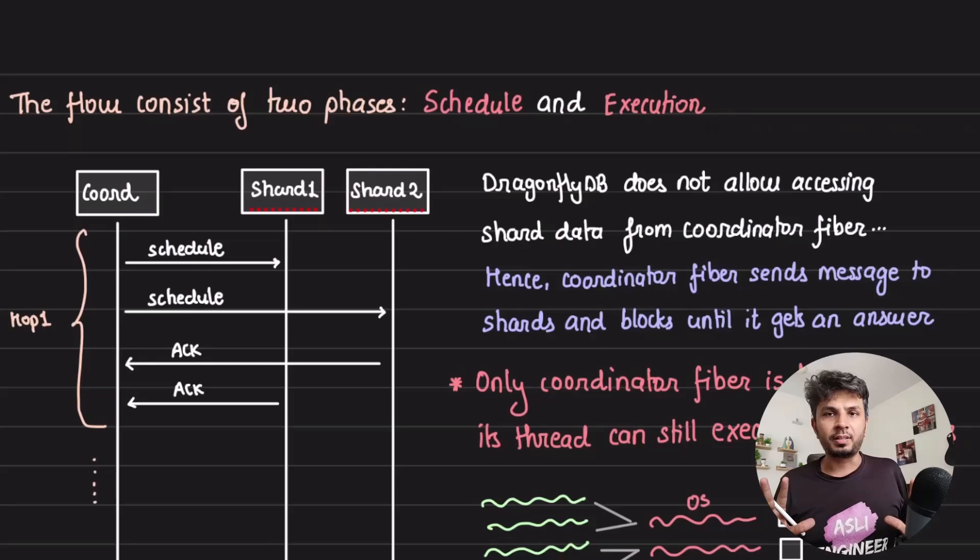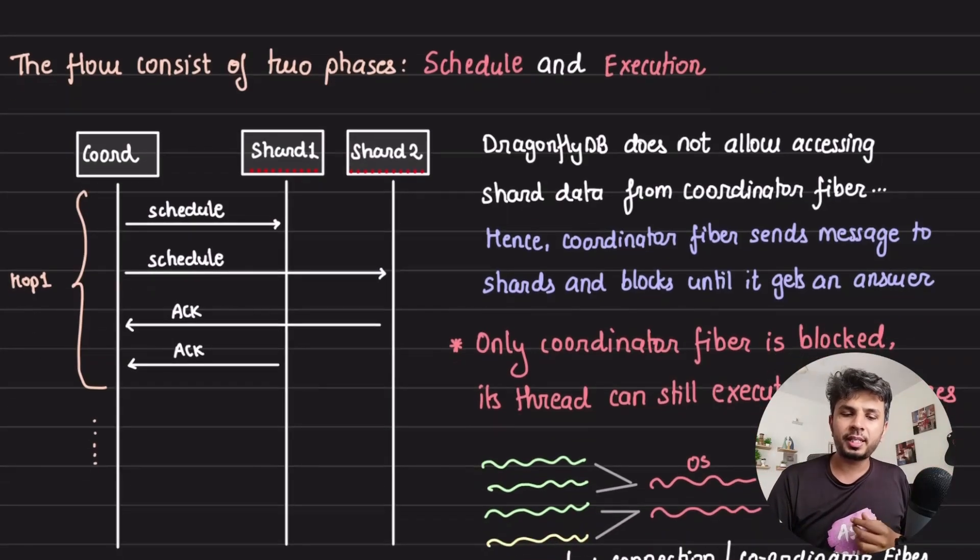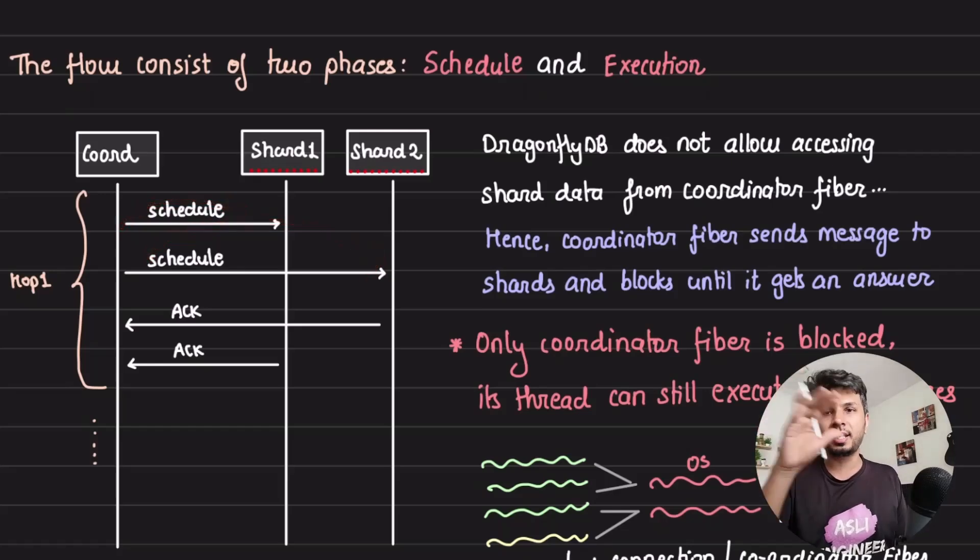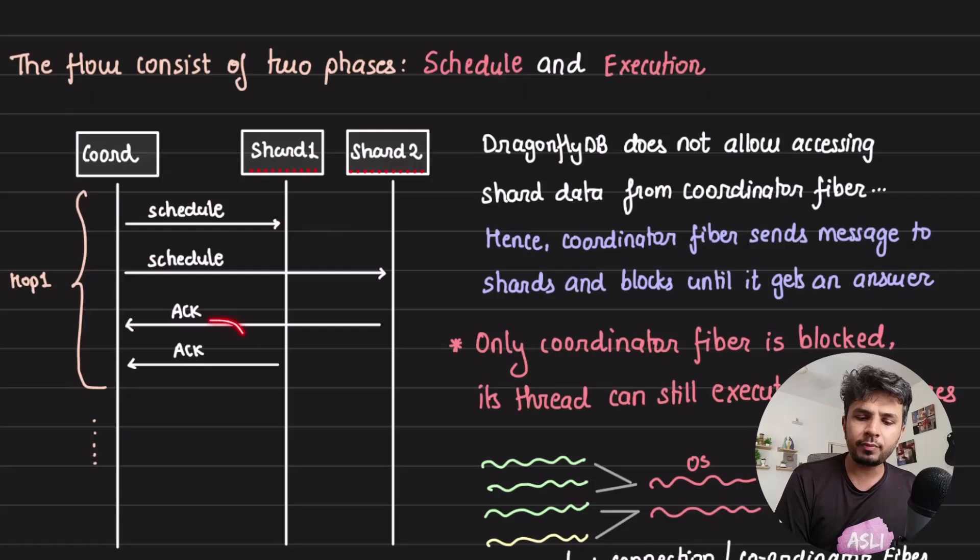The whole idea is very simple. First of all, the coordinator fiber will initiate the schedule call with all the involved shards. For example, for a particular transaction, my keys involved are K1 and K2, which are owned by shard 1 and shard 2. You may have 50 other shards there. But the shards which are involved, the first thing that your coordinator fiber would do is initiate a schedule with all the details with the corresponding shards involved as part of the transaction. And then it will be waiting for the acknowledgement to receive from both of them.